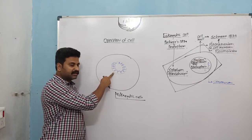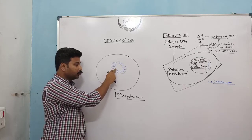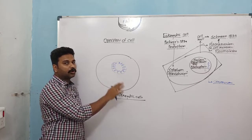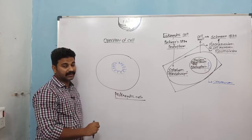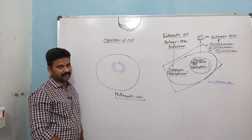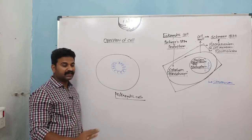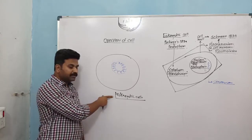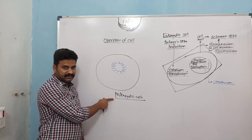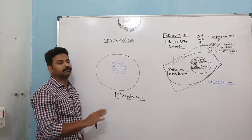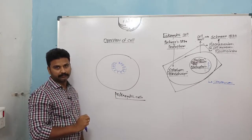In a prokaryotic cell, the chromosome will be circular, made from two strands, and naked — meaning it will have no covering on it. That is why we say the prokaryotic cell has a nucleus without a membrane.